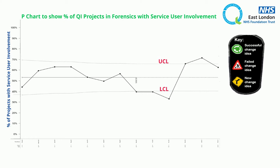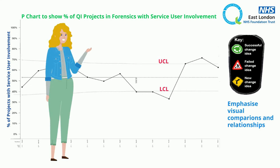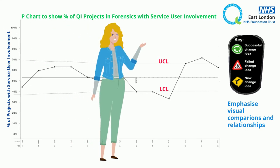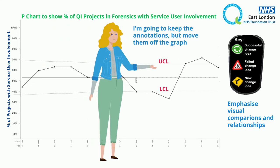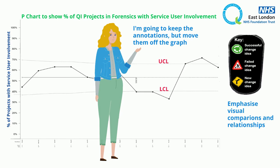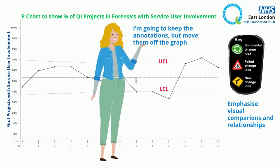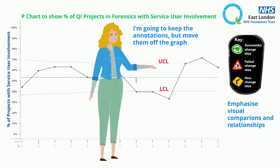Tufte's rules call for us to emphasise visual comparisons and relationships. So on our example, I'm going to keep the annotations to explain the events and changes in the smallest space.